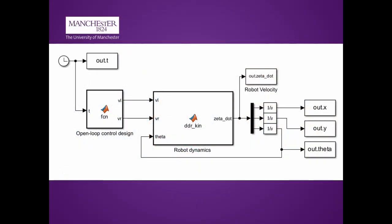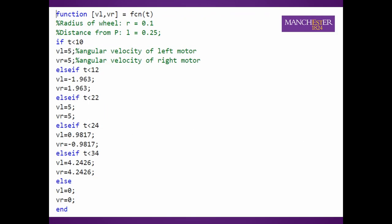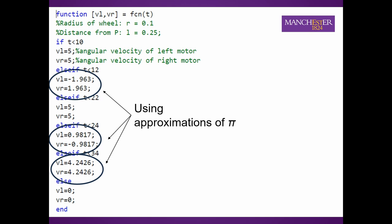By implementing an open loop transfer function, we can create a model of a basic point-to-point mobile robot. Our desired speeds are calculated and set in the controller. Here angular velocities have been rounded to avoid inputting a factor of PI.